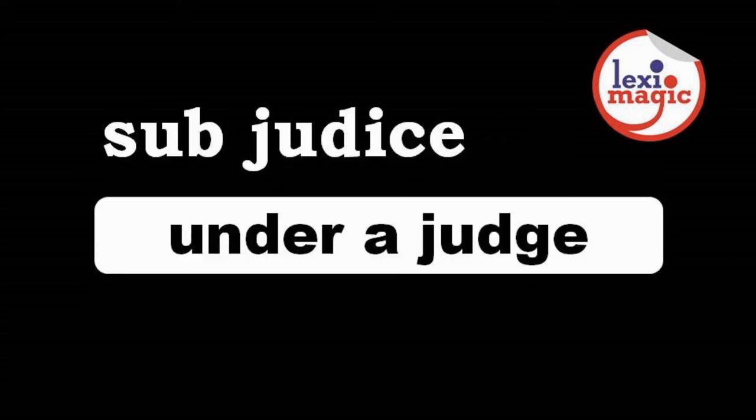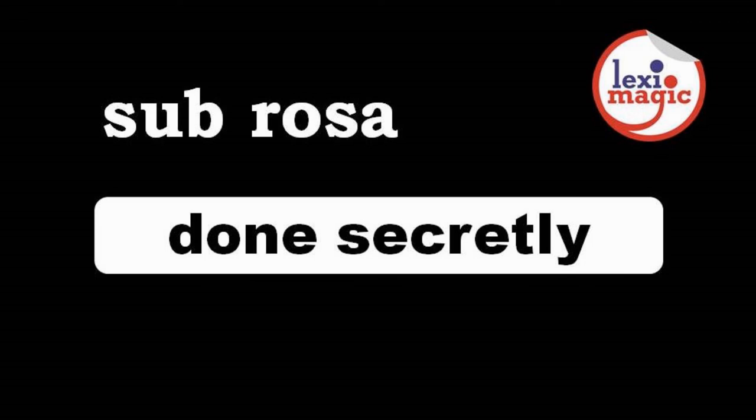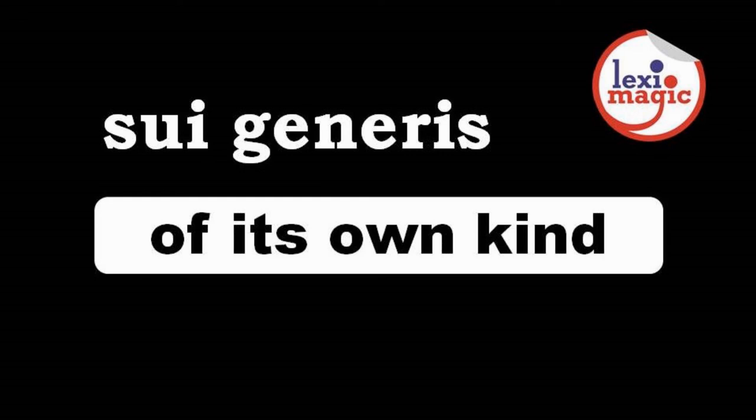Sub judice translates to 'under a judge.' For example, the prime witness will give his testimony sub judice. Sub rosa is a phrase used to refer to something done secretly. Example: the special committee carried out the investigation sub rosa. Sui generis translates to 'of its own kind.' For example, when art critics are not able to classify a creative work under a specific genre, they may term it sui generis.